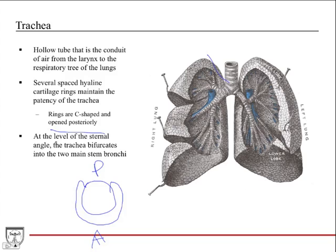At the level of the sternal angle — where the manubrium joins the body of the sternum — the trachea bifurcates into the two main stem bronchi. Here's the right main bronchi, and here's the left main bronchi, and those are what go into the lungs.